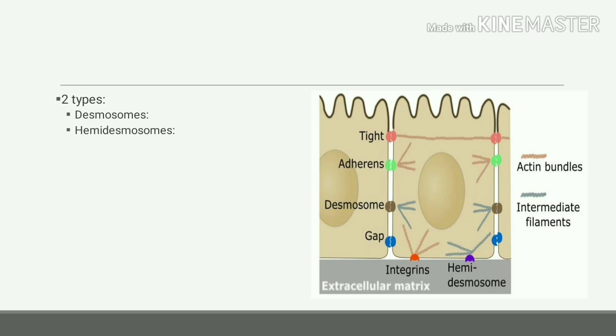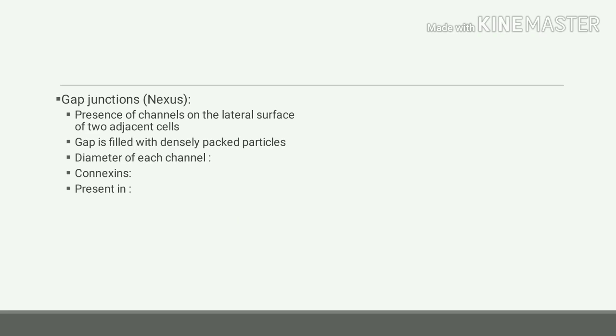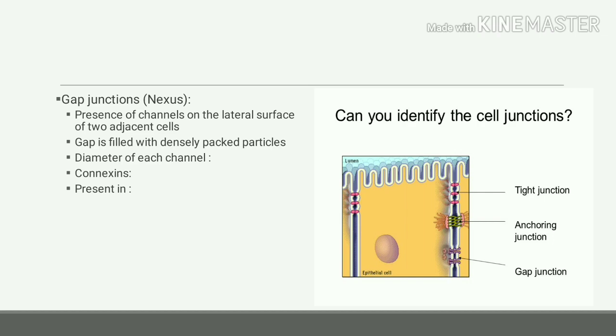The third variety of intercellular junction is gap junction, which is also known as nexus. Here, channels are present on the lateral surface of two adjacent cells.